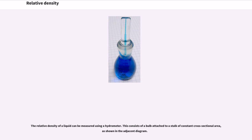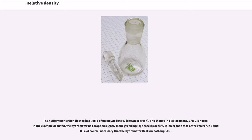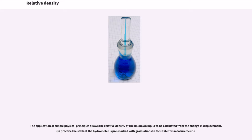The relative density of a liquid can be measured using a hydrometer. This consists of a bulb attached to a stalk of constant cross-sectional area, as shown in the adjacent diagram. First, the hydrometer is floated in the reference liquid (shown in light blue) and the displacement — the level of the liquid on the stalk — is marked (blue line). The reference could be any liquid but in practice it is usually water. The hydrometer is then floated in a liquid of unknown density (shown in green); the change in displacement, delta x, is noted. In the example depicted, the hydrometer has dropped slightly in the green liquid, hence its density is lower than that of the reference liquid. The stalk of the hydrometer is pre-marked with graduations to facilitate this measurement.